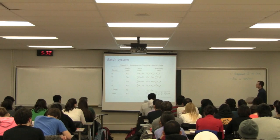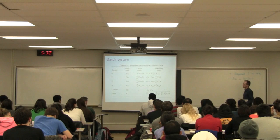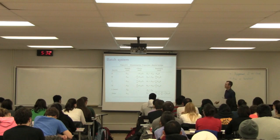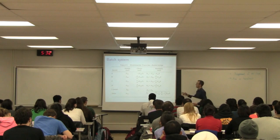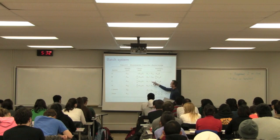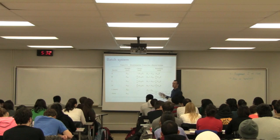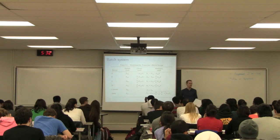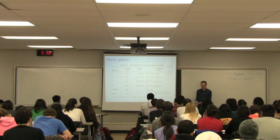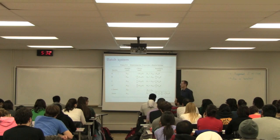We also derived from the previous class what the concentrations are — Cₐ, C_b, C_c, etc. — if we assume constant volume. Now let's take that assumption away.